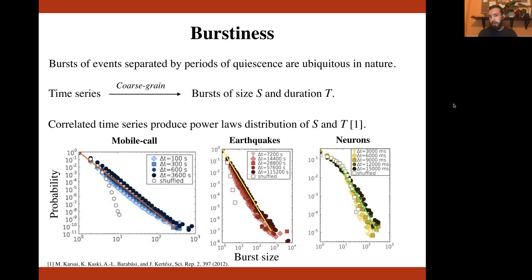A standard approach is to coarse grain this time series in bursts, and then study the probability distribution, the statistics of the sizes of the bursts, meaning the number of events inside each burst, and the duration of each burst.